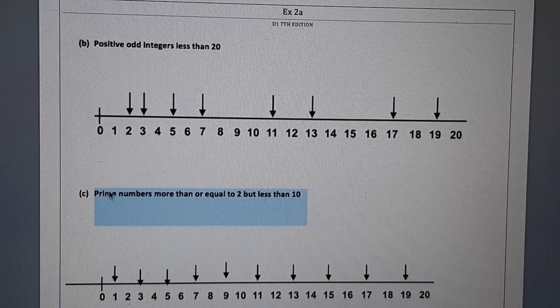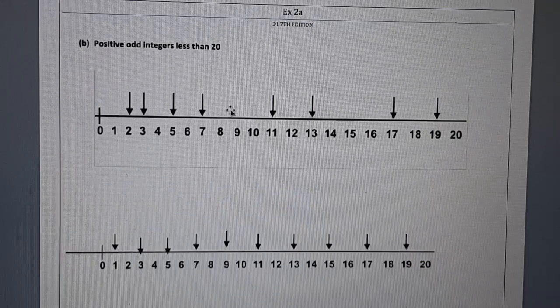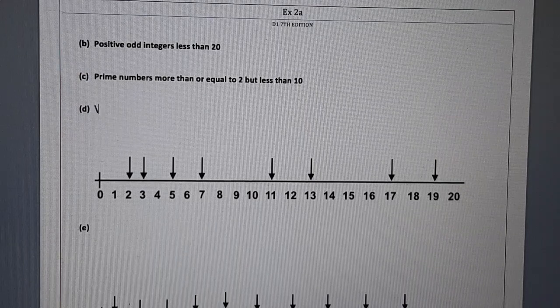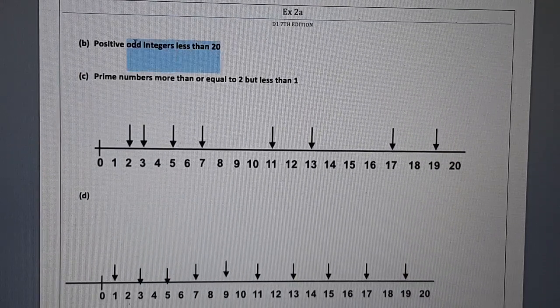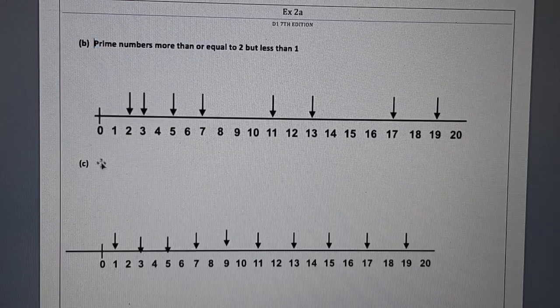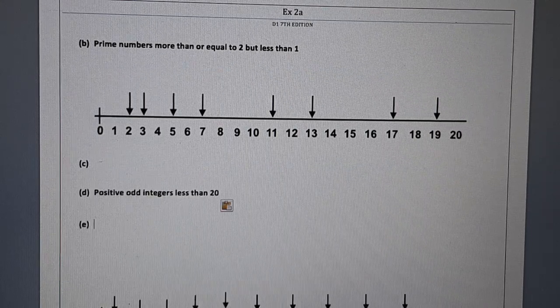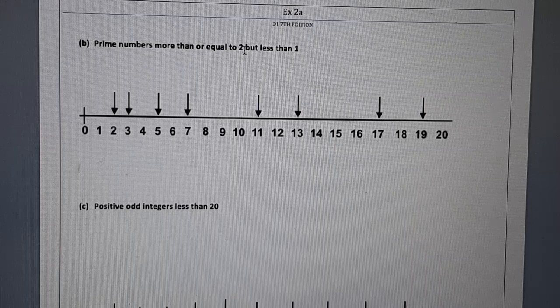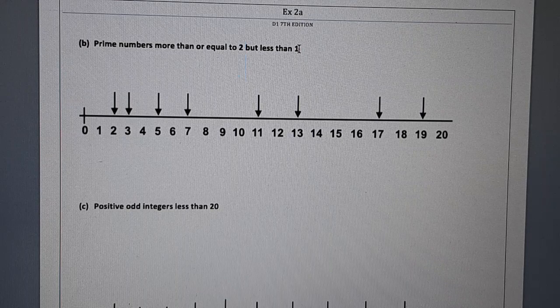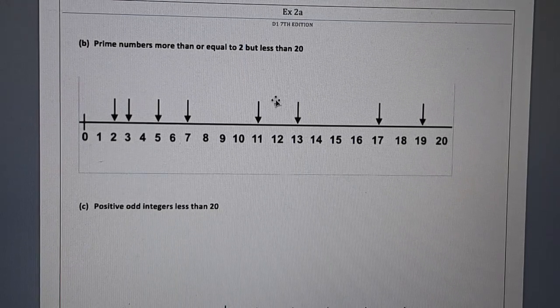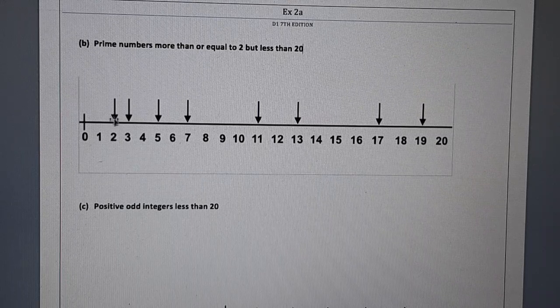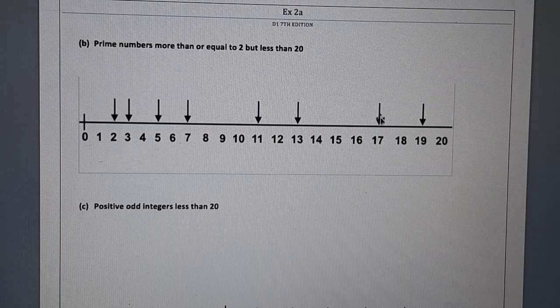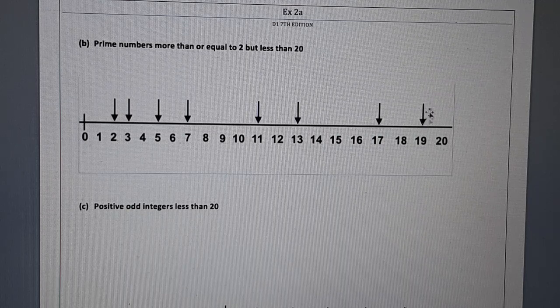So let me make a correction over here. Now this one will be coming over here. Now this is the solution of part C in this one prime numbers. Here the diagram is correct. The parts are basically interchanged. Part B will be coming over here. Now we have got it right. Now here prime numbers more than or equal to 2 and less than 20. So prime number more than or equal to 2: 2 is a prime number, then 3, then 5, then 7, 11, 13, 17, 19. And less than 20, we have to restrict our answer till here.